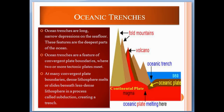Ocean trenches are a feature of convergent plate boundaries where two or more tectonic plates meet. At many convergent plate boundaries, dense lithosphere melts or slides beneath less dense lithosphere in a process called subduction. As you can see, these are two plates — a continental plate and an oceanic plate — and when the dense oceanic plate subducts beneath the less dense continental plate, the oceanic plate reaches the mantle and starts melting.